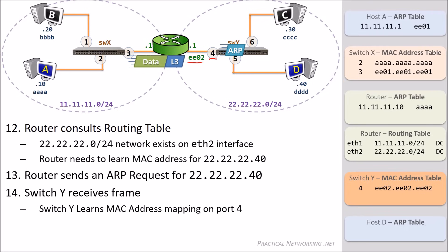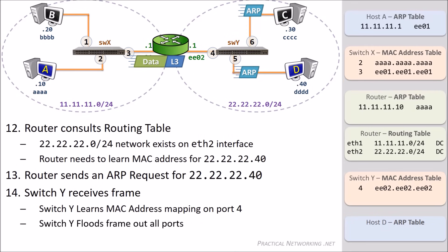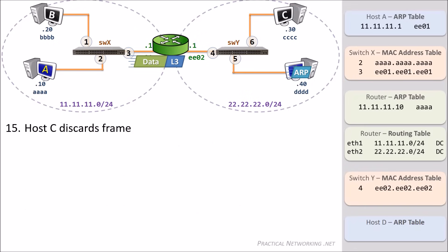Just like before, the ARP request is a broadcast frame, which means it should be delivered to everyone in the network. SwitchY will flood the frame out all ports except the port it came in on, which means that both Host C and Host D will get a duplicate copy of the ARP request. When Host C gets the frame, it'll take a look and realize that the request is for someone else's IP address, so it'll simply discard it without taking any action.